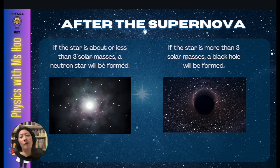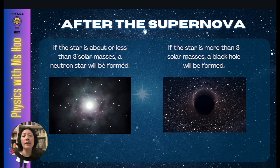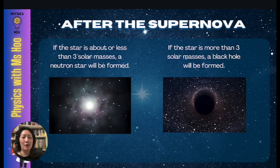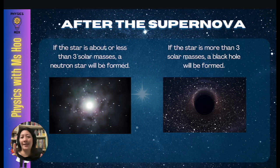After the supernova, what happens also depends on the mass of the star. If the star is about or less than 3 solar masses, a neutron star will be formed, while if the star is more than 3 solar masses, a black hole will be formed. One solar mass is the mass of our Sun. We take measurements based on our standards because it's easier to comprehend, and our Sun is the center of our solar system — that's why one solar mass is the mass of our Sun.